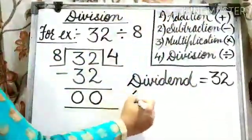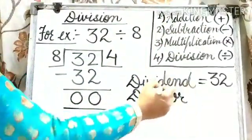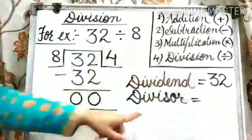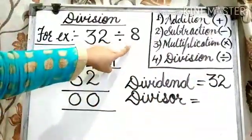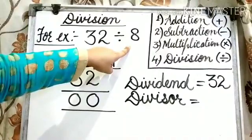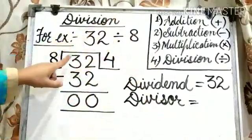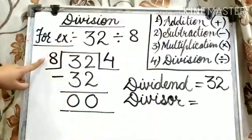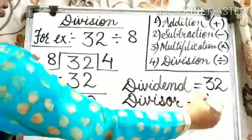The next term is divisor. What is divisor? The number by which the dividend is divided is called the divisor. Here, we have divided 32 by 8, so 8 is the divisor.